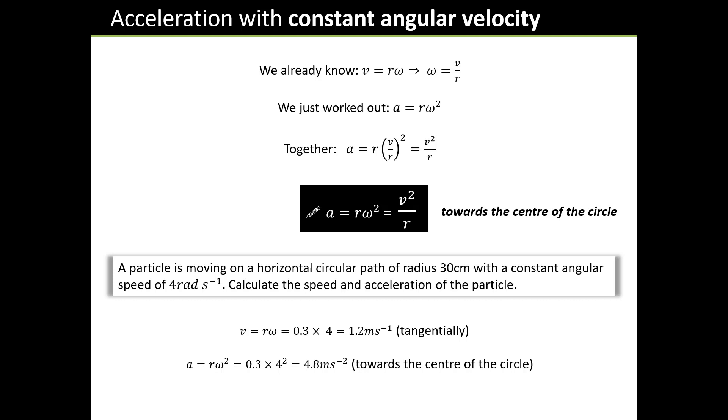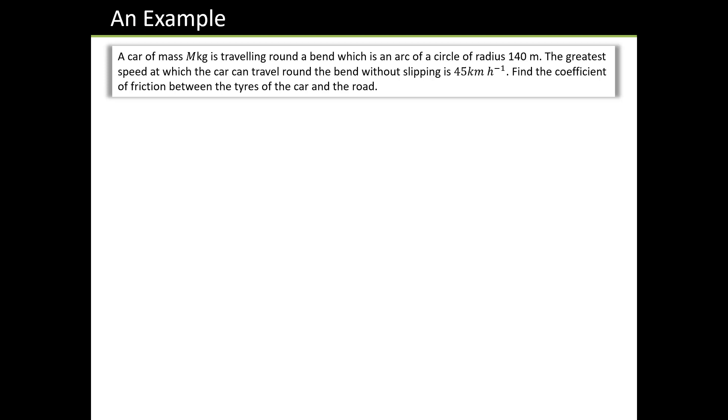Amazingly, those are all the formulae we need for the time being, and we can now solve some quite tricky looking problems. Here's one. A car is traveling around a bend, which is an arc of a circle. Notice this stuff only works for circles and bits of circles. This circle has a radius of 140 meters, and the greatest speed at which the car can travel around this bend without slipping is 45 kilometers an hour. What's the coefficient of friction between the tires of the car and the road? This is a lot more straightforward than it looks. These problems are all about modeling.